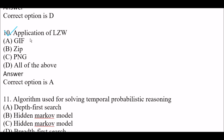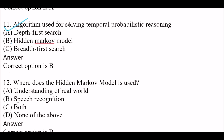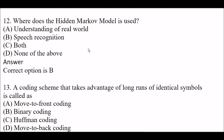Question 11 answer: GIF. Question 12: Algorithm used for solving temporal probabilistic reasoning — Option A: Depth-first search. Option B: Hidden Markov Model. Option C: Breadth-first search. The right answer is Option B — Hidden Markov Model. Next question: Where is the Hidden Markov Model used? Option A: Understanding of the real world. Option B: Speech recognition. Option C: Both. Option D: None of the above. The right answer is Option B — speech recognition. The Hidden Markov Model is used in speech recognition.